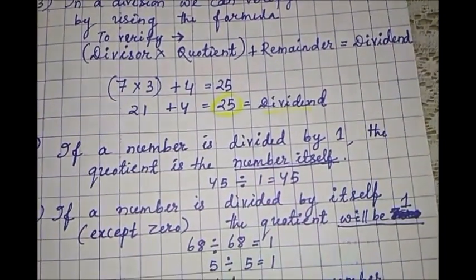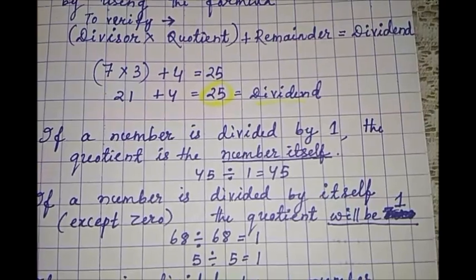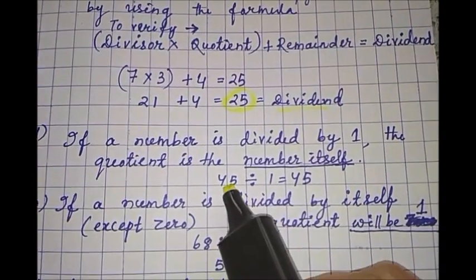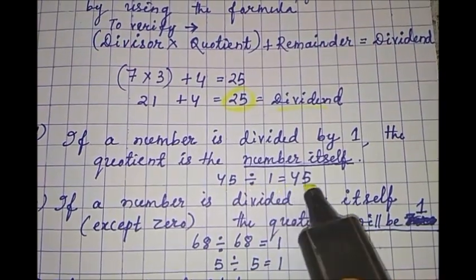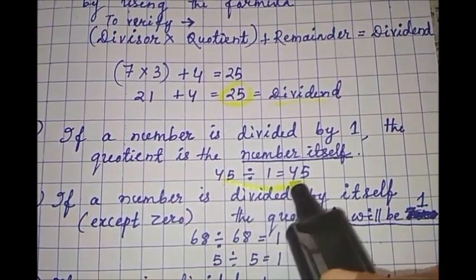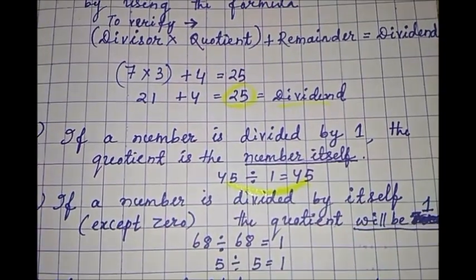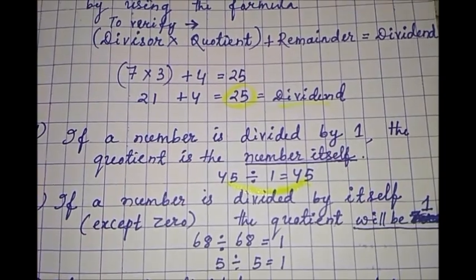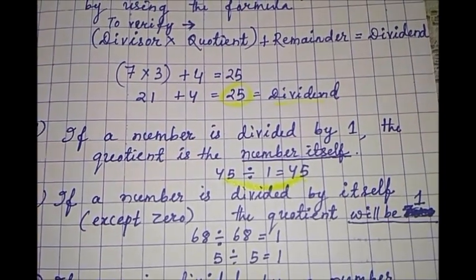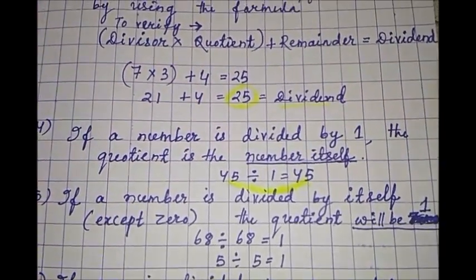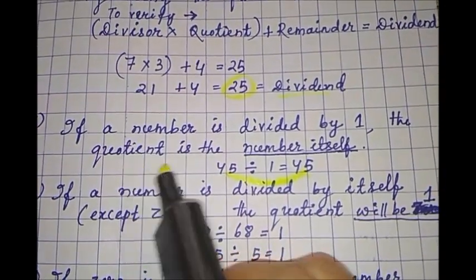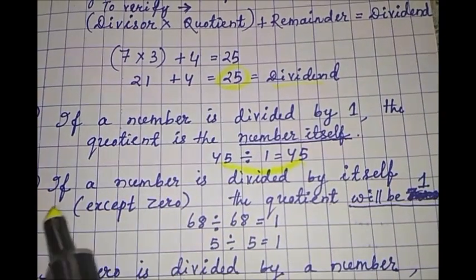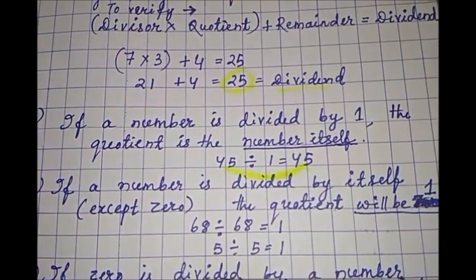Then point 4. If a number is divided by 1, the quotient is the number itself. Remember this. When 45 is divided by 1, then what is the answer? The number itself, same number, 45. Or another example, 7 divided by 1 will be 7. 5 divided by 1 will be 5. Any number divided by 1, the quotient is the number itself. Underline and write all these in your maths copy.